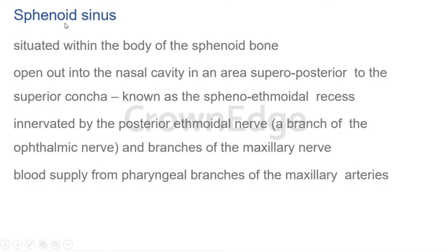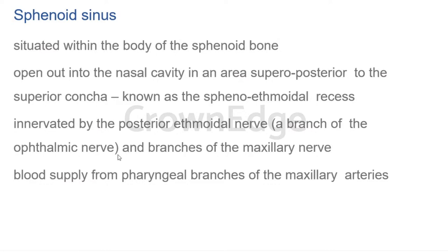The sphenoidal air sinus is present in the sphenoid bone, a butterfly-shaped bone in the middle cranial fossa with a greater and lesser wing. The body of the sphenoid has a hollow structure — the sphenoidal air sinus. This sinus does not open into a meatus but into the sphenoethmoidal recess, a gap above the superior meatus. The nerve supply is from the posterior ethmoidal nerve and some branches of the maxillary nerve. Blood supply is from pharyngeal branches of the maxillary artery.